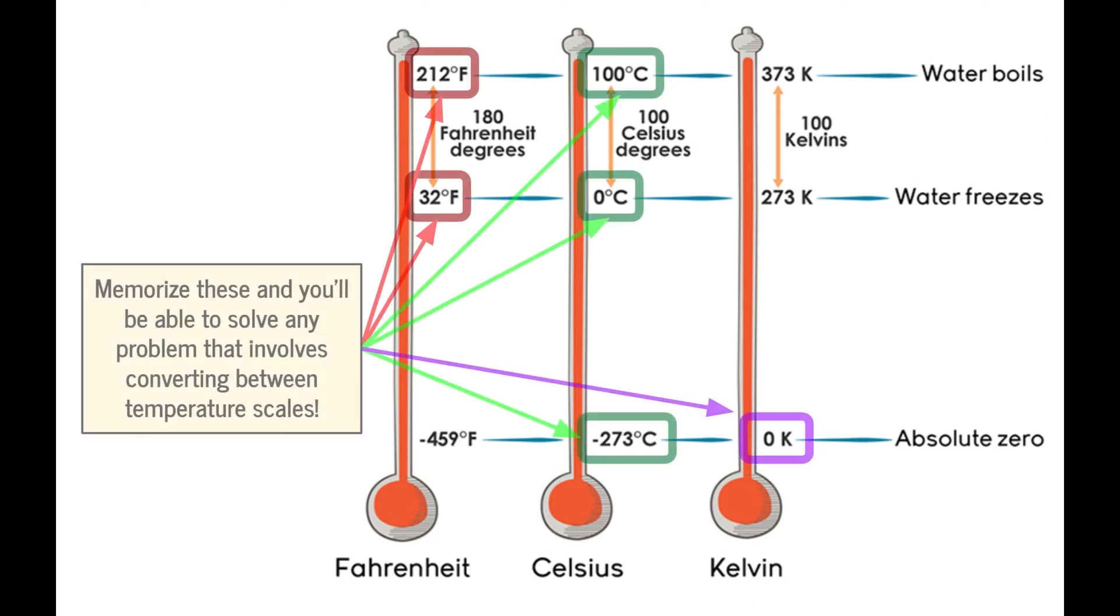One thing that would be smart to do is to memorize the temperatures that I've labeled here. If you can remember that water's freezing point is either 32 degrees Fahrenheit or zero degrees Celsius, and if you can remember that water's boiling point is 212 degrees Fahrenheit or 100 degrees Celsius, and lastly, if you can memorize that absolute zero is either zero Kelvin or negative 273 degrees Celsius, then you can solve pretty much any problem that involves converting between temperature scales. Everything else can come afterwards with a formula.